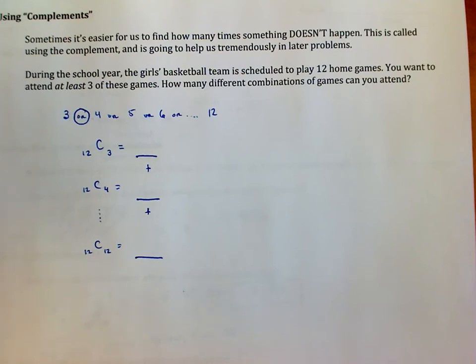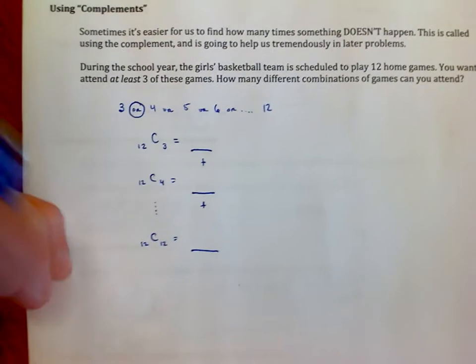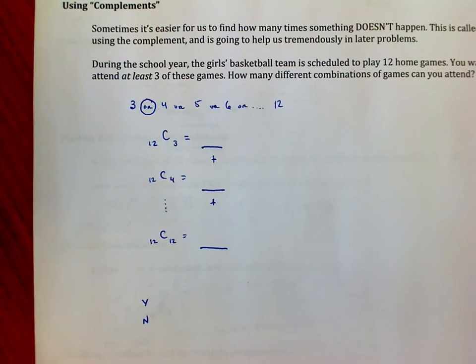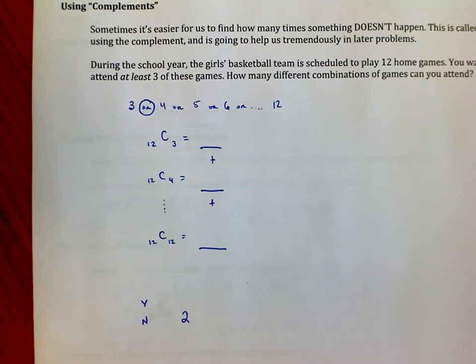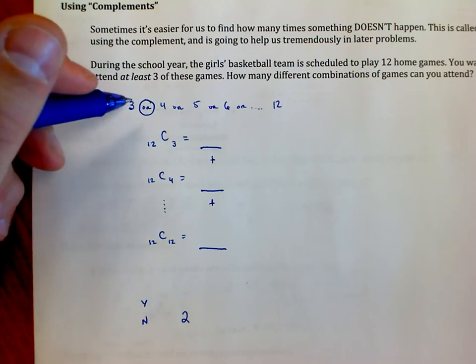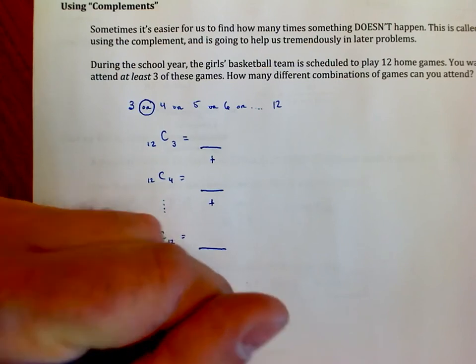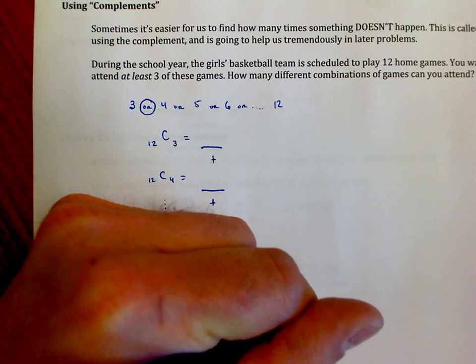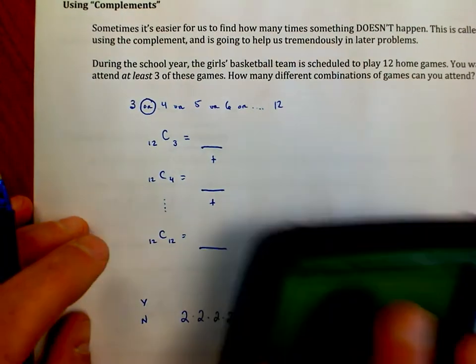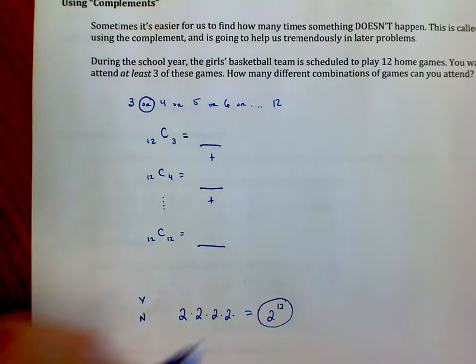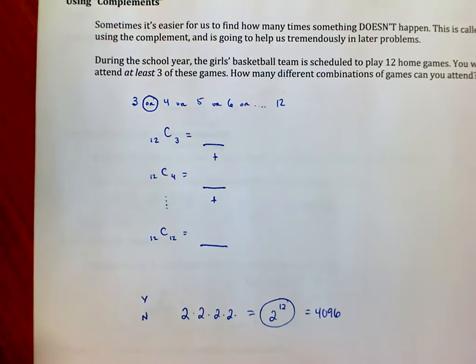But there's a quicker way. See, what we could do is decide, first of all, how many choices do I have to begin with? Well, I have the choice of either yes, attending, or no, not attending all 12 of the games. So I have two choices for each game, and I'm going to do that 12 different times. In fact, I have two to the 12th total choices. I raise two to the 12th power—I have 4096 different choices that can be made.